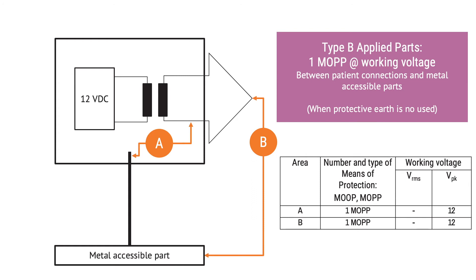This next example could be an infusion pump, which can be classified as a type B applied part because the patient connection through the fluid column is not intended to deliver electrical energy or an electrophysiological signal to or from the patient. Here, the patient connection shall be separated from metal accessible parts, such as a metal stand, by one means of patient protection at working voltage.